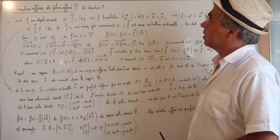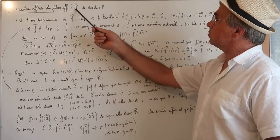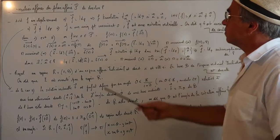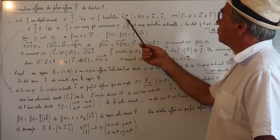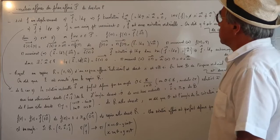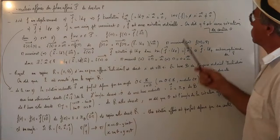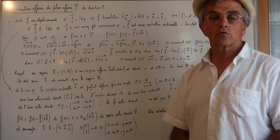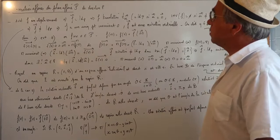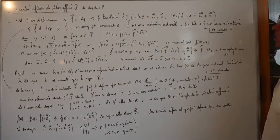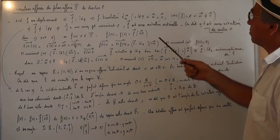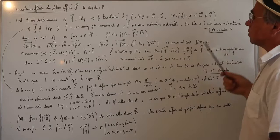Voyons maintenant les isométries affines du plan affine P. Soit F un déplacement. Si sa partie linéaire est l'identité du plan vectoriel, alors F est une translation T_U, qui est l'identité du plan affine si U est le vecteur nul, et sinon il n'y a pas de point invariant. Deuxième cas : si la partie linéaire n'est pas égale à l'identité, on va démontrer qu'il y a un unique point invariant. La partie linéaire de F est une rotation vectorielle, et on dit que F est une rotation de centre O.